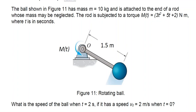Hi everyone. The ball shown in this figure has a mass of 10 kg and is attached to the end of a rod whose mass may not be neglected. The rod is subject to a torque, given as a function of t in seconds. The problem asks us to find the velocity of the ball at t equal to two seconds, given that at t equal to zero seconds the velocity is equal to two meters per second.